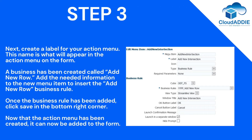Step 3. Create a label for your action menu — this is what will appear in the action menu on the form. A business rule has been created called Add New Row. Add the needed information to the new menu item to insert the Add New Row business rule. Once the business rule has been added, click Save in the bottom right corner.